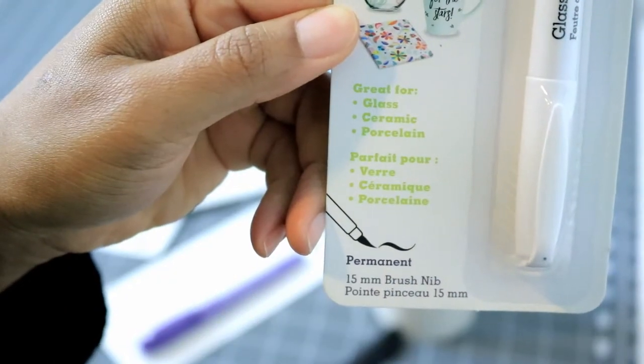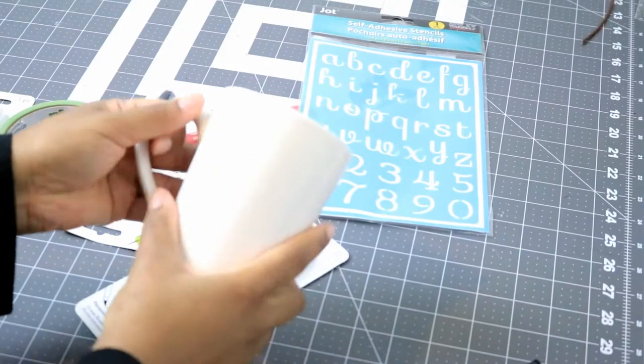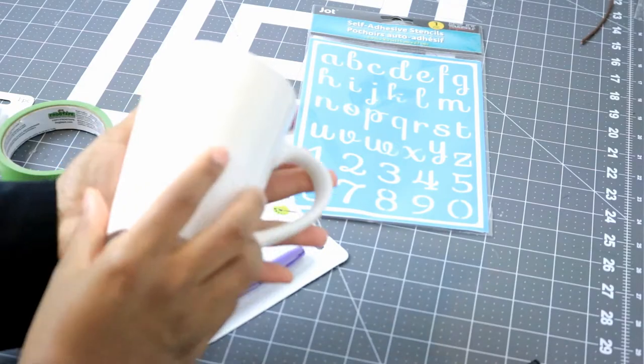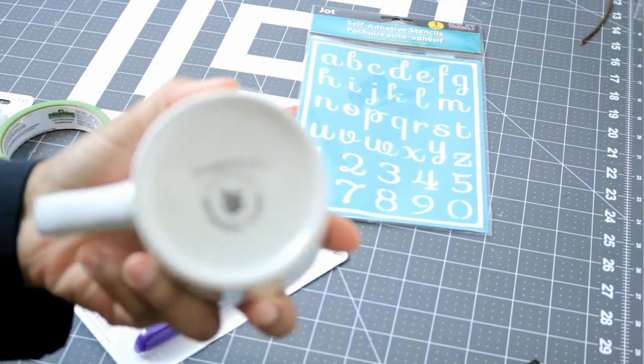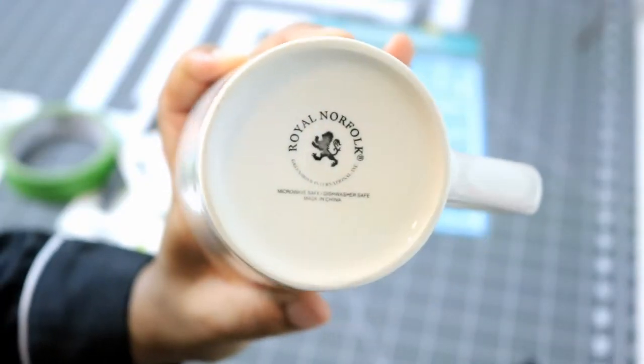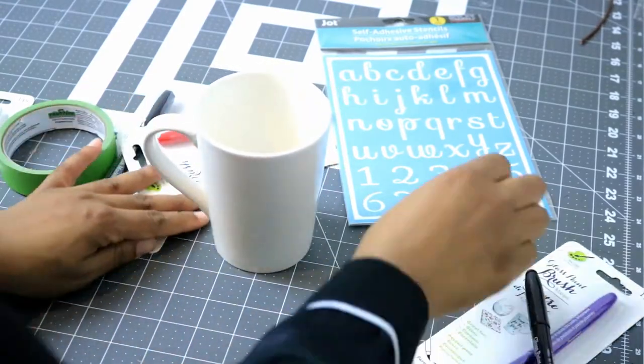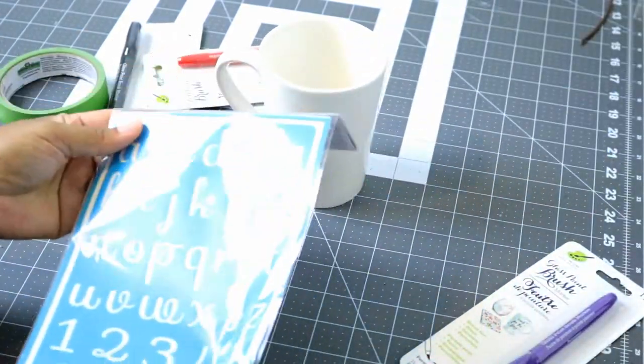They're great for glass, ceramic, and porcelain and they claim to be permanent. I also got this mug from Dollar Tree. I got this brand in particular because I know it's really good and I wanted to use the best glass for my tea mug.